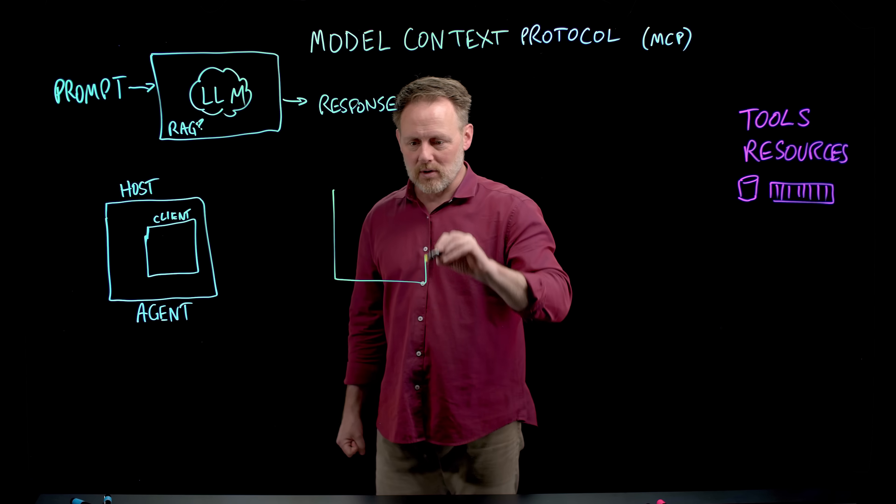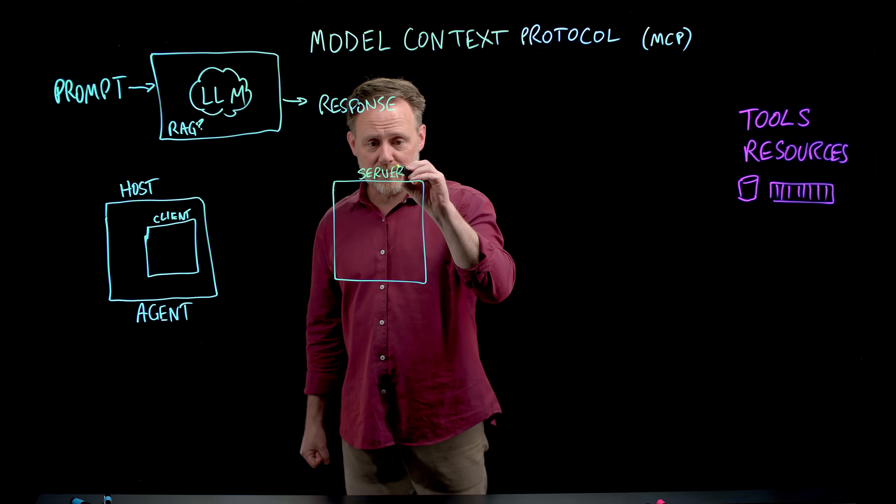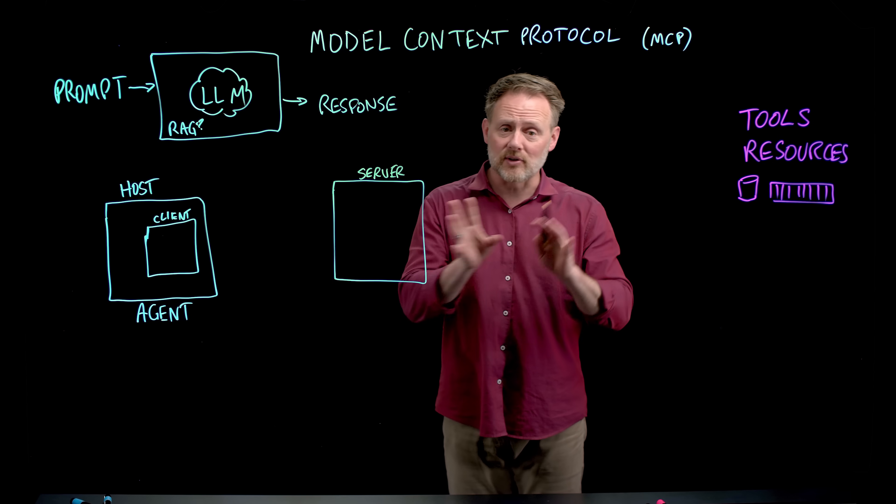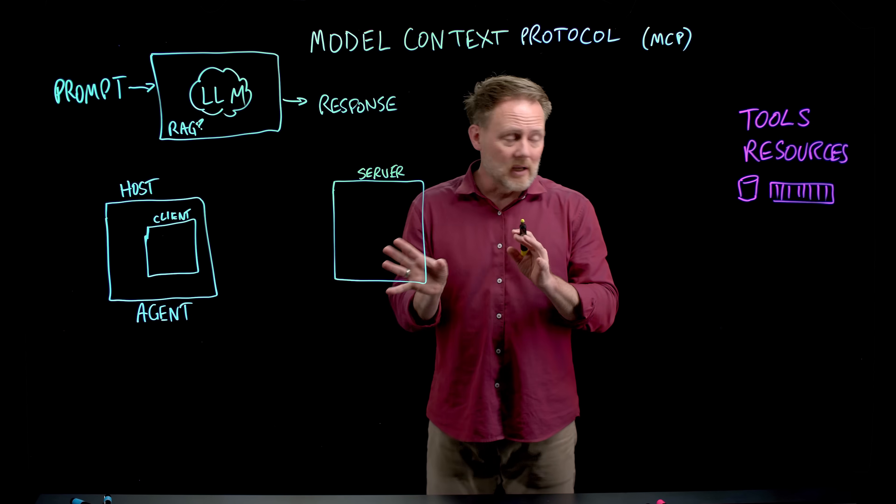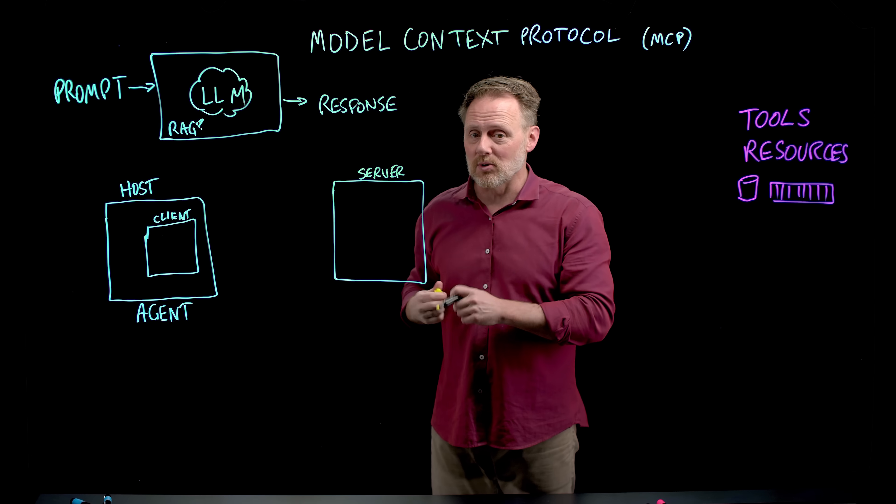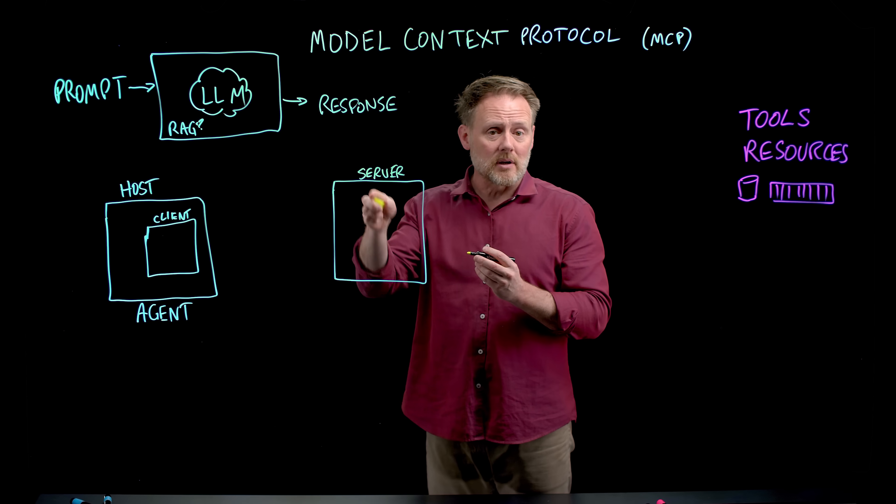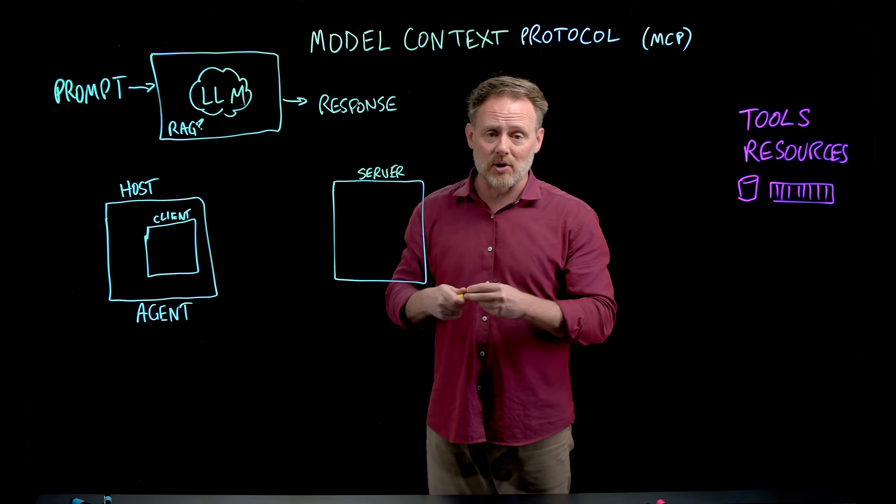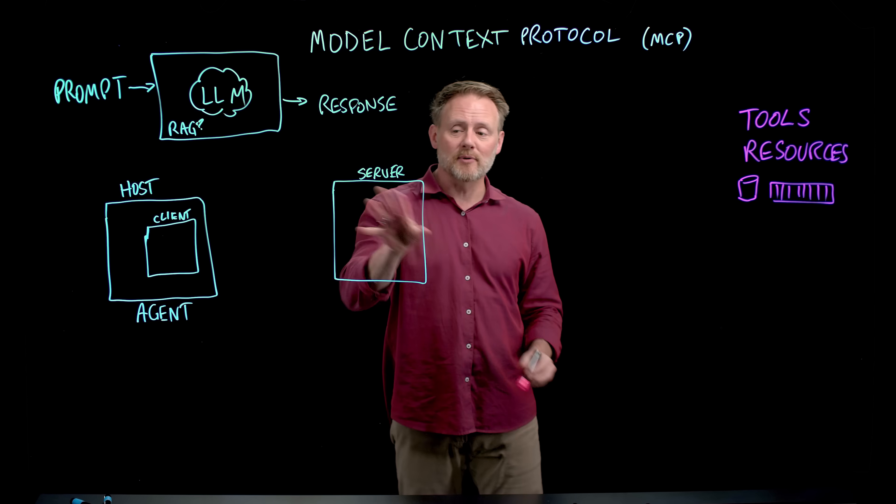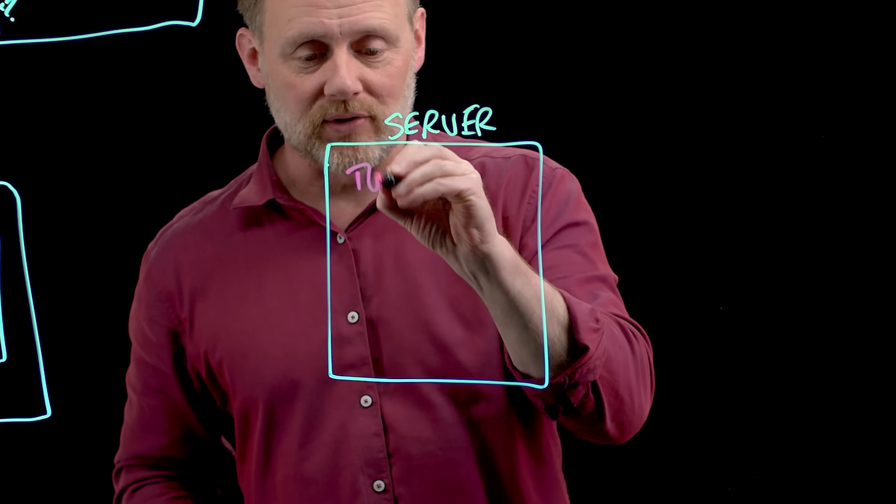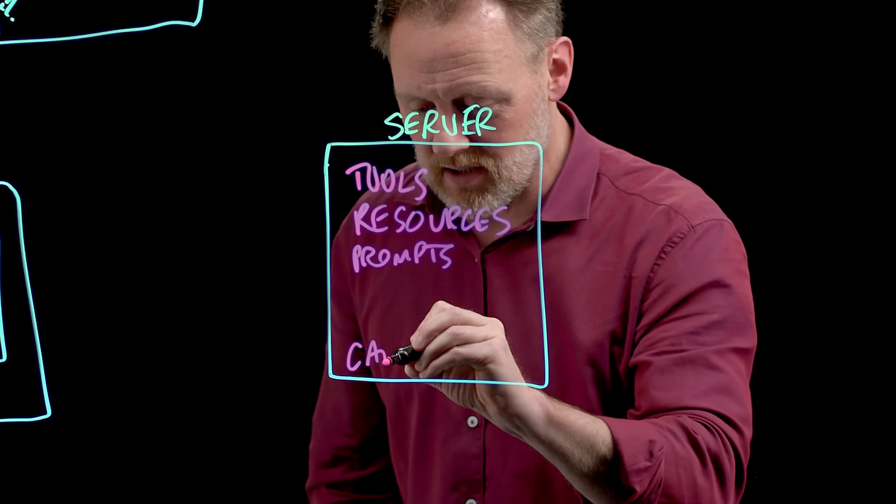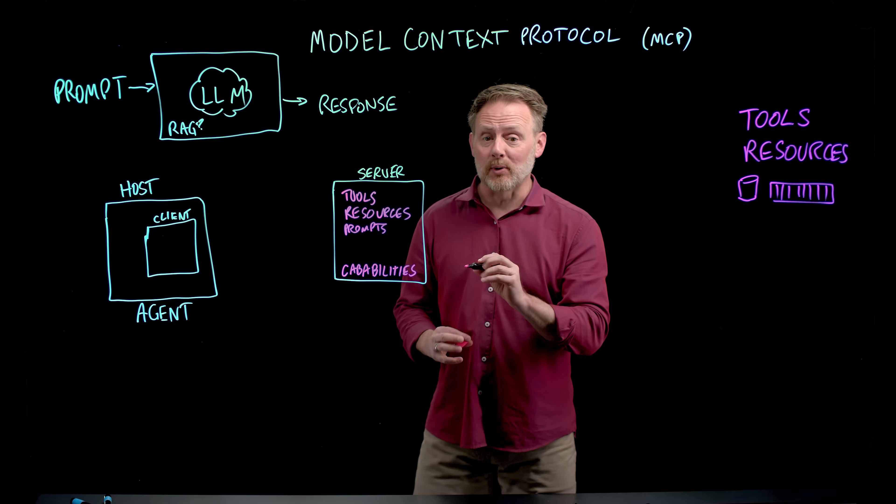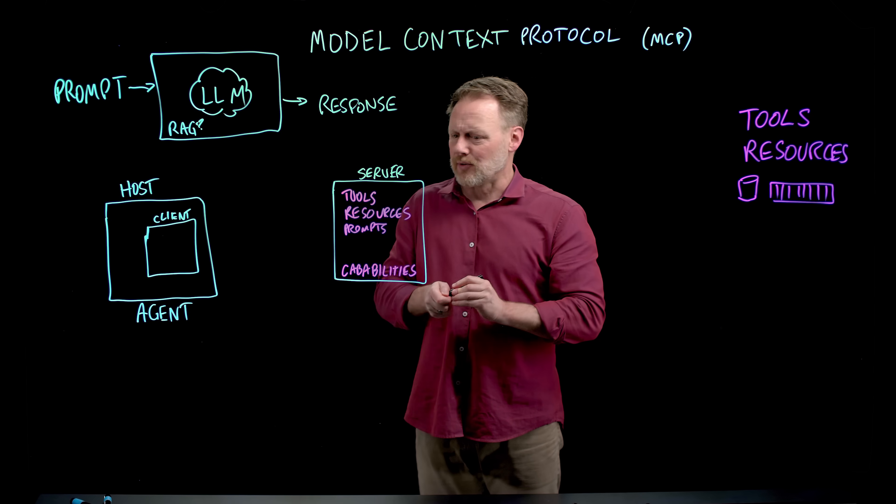Out here, we're going to create an MCP server. This may be a server that already exists, that somebody else has built, that we want to take advantage of to bring agentic functionality into our service. Or this could be a server that we ourselves are creating. Inside the server, what do we have? We've got access to tools, resources, prompts, capabilities that the server makes available, and even describes to the outside world.